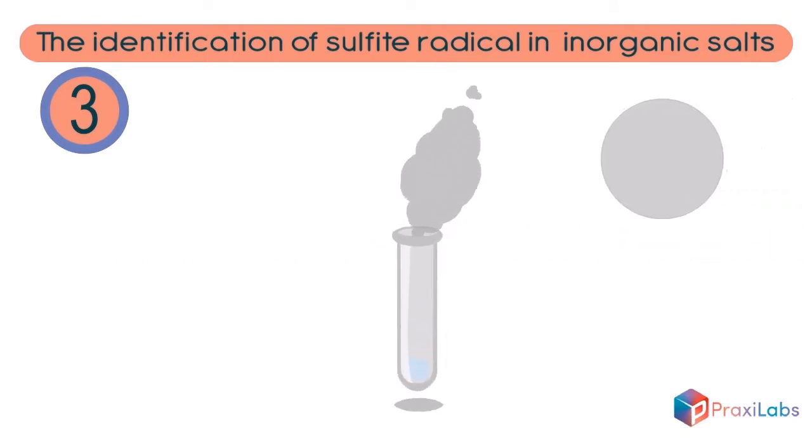Place a piece of filter paper in acidified potassium dichromate. Then place the paper at the opening of the tube that the gas is rising from. Notice the change in the paper's color to green.